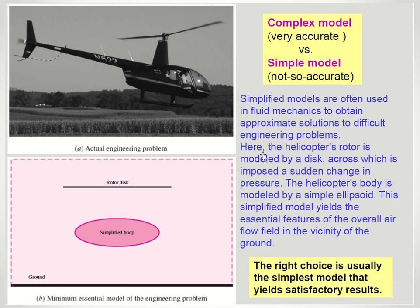Let me give you an example of a model. Say we wanted to model a helicopter flying in the air. That could be a very complex model, or it could be simplified into something as simple as an elliptical body and some rotor disk. When it comes to modeling, you can either have a very complex and very accurate model or a simple and not-so-accurate model — both have pros and cons.